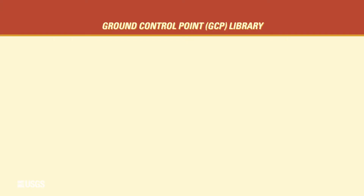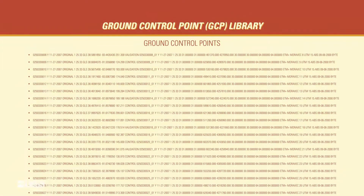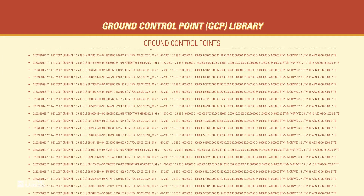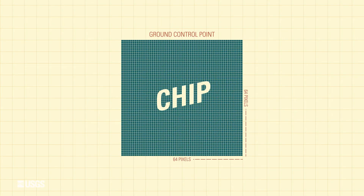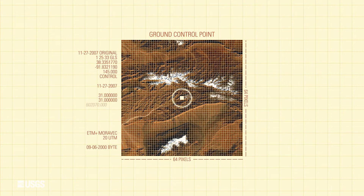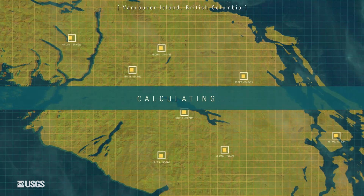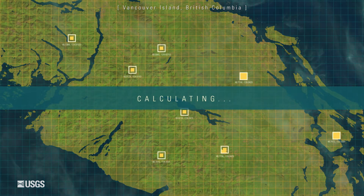What we've done is built a ground control library — a stack of GCPs that we correlate each image to. Ground control points are chips pulled from a reference grid. Each of these chips are small images in their own right, which we have precisely located at the Earth's surface. We take the images, compare them against hundreds of ground control points for each image, and shift the data sets so that they align with the ground control points.